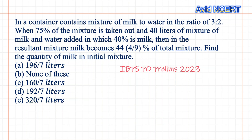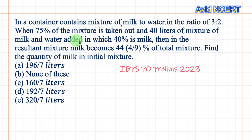Hello viewers, welcome to my channel, this is Geeta. Today I'll be solving a question from IBPS PO Prelims 2023. A container has a mixture of milk to water in the ratio 3:2. When 75% of the mixture is taken out and 40 liters of mixture of milk and water is added, in which 40% is milk, the resultant mixture has milk as 44 4/9% of the total mixture. Find the quantity of milk in the initial mixture.